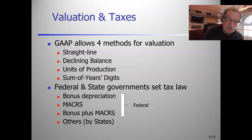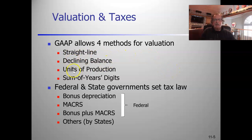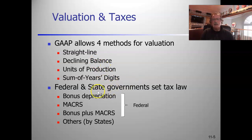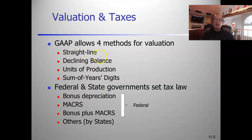GAAP - Generally Accepted Accounting Principles - allows for four methods of depreciation: straight line, declining balance, units of production, and sum of years digits. The only one we're really going to study is straight line, because the federal and state governments have set tax law utilizing primarily MACRS depreciation and bonus depreciation. The three we're going to understand most are straight line and MACRS.